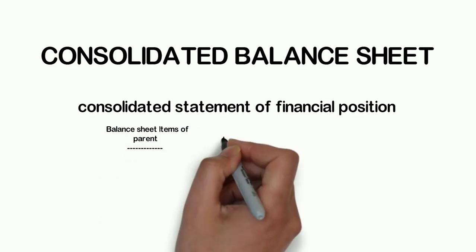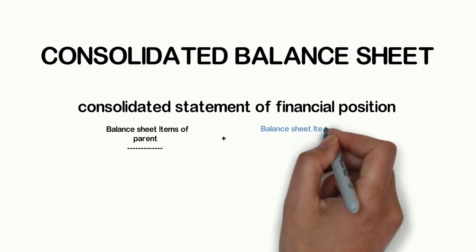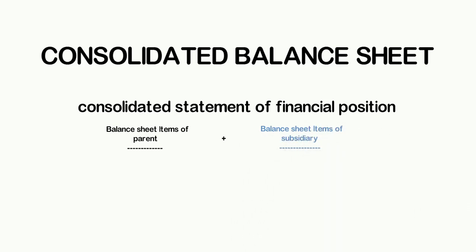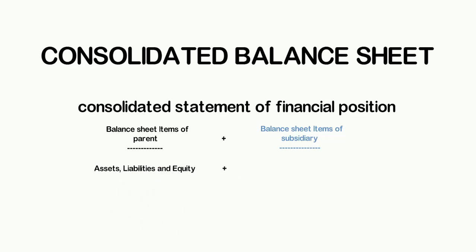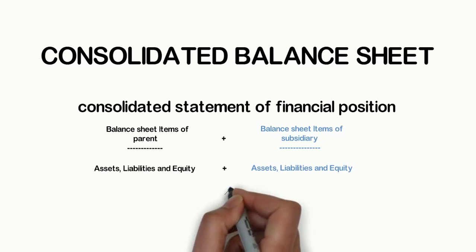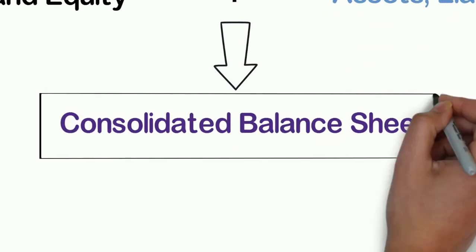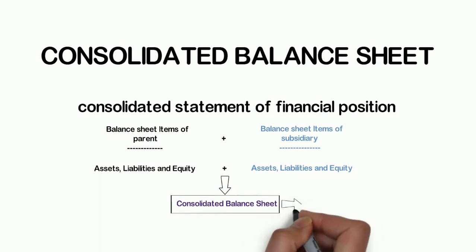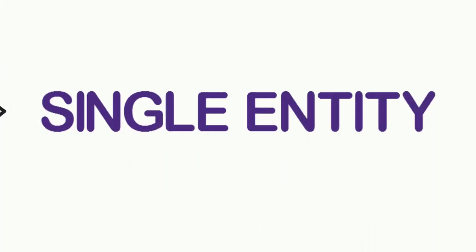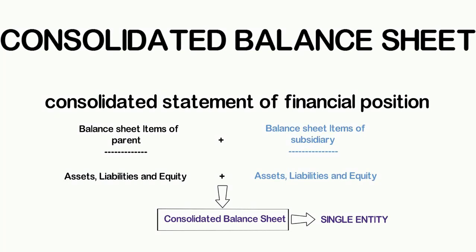The balance sheets of a parent and its subsidiary are prepared separately, but for consolidation purposes they are combined on a line-by-line basis by adding together balance sheet items of assets, liabilities, and equity of both parent and subsidiary, so that the consolidated balance sheet shows financial information about the group as if it were a single entity. Now let us look at the individual components of the consolidated balance sheet.